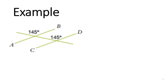Here we have an example with two lines — line AB and line CD — and they are both going in the same direction. And then we have this other single line going in the other direction. We need to work out if we have a pair of parallel lines here. The two lines that could possibly be parallel are line AB and line CD.